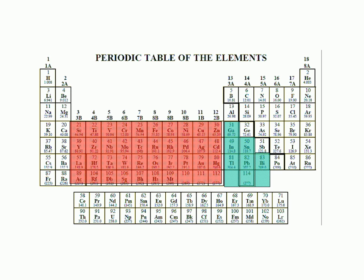The six naturally occurring post-transition metals are gallium, indium, thallium, tin, lead, and bismuth.